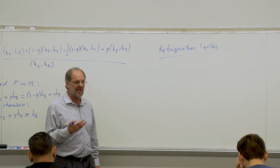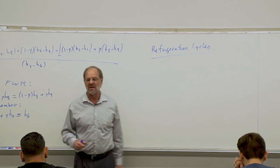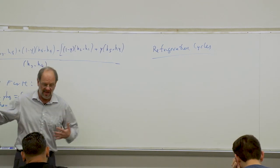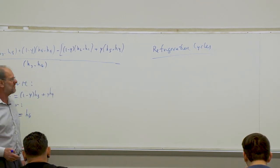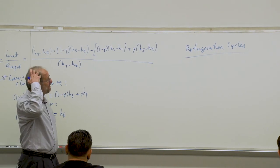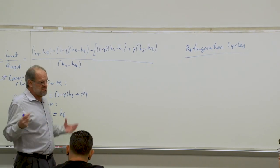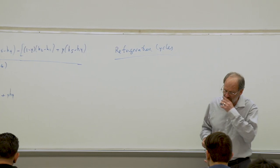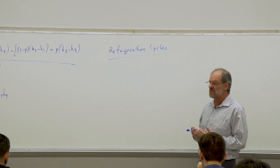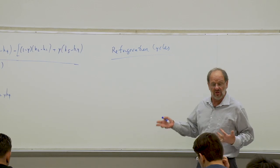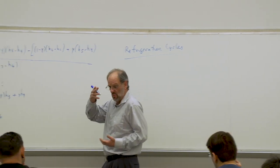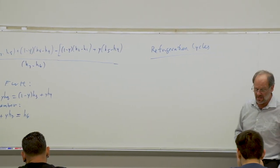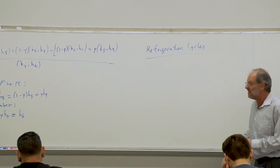In a refrigeration cycle, what is of interest is the amount of heat transfer we're able to attain from the cycle. We want to maximize the cooling effect — in an air conditioning system, refrigerator, or freezer. At the same time, we want to minimize what we pay for, which is work input. So we're trying to maximize heat transfer and minimize work. We need a performance parameter that is as high as possible, with heat transfer in the numerator and work in the denominator.